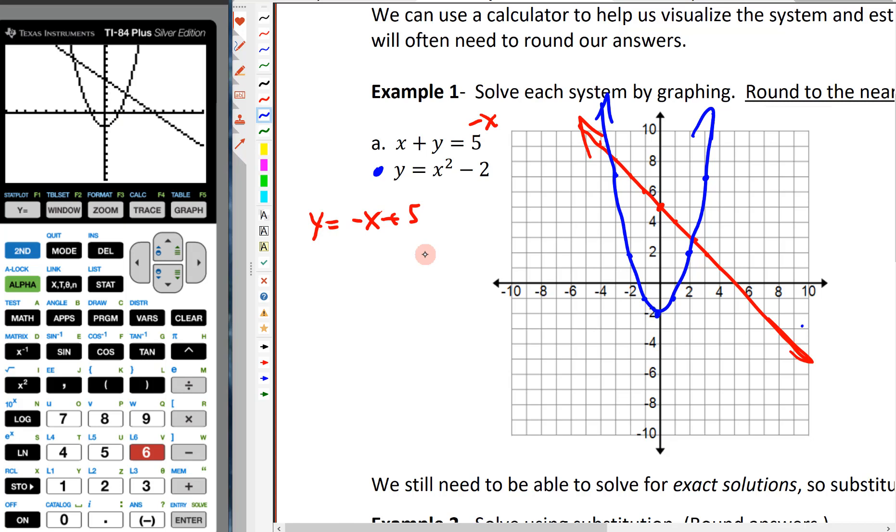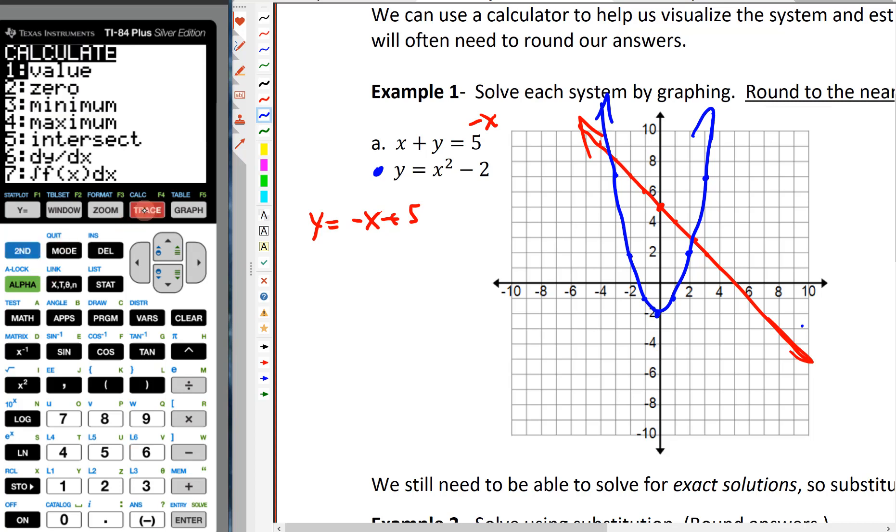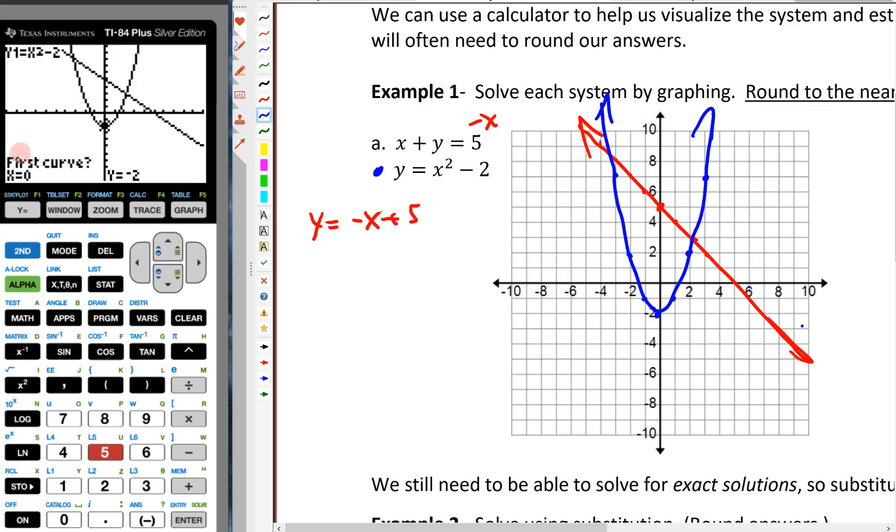Our graph looks really good. And then does anybody remember the buttons you hit to make the calculator find the intersection point between two graphs? Luke. Second trace or second calculate. Number 5, it says intersection. It says, is this one the first curve? So is the parabola the first curve? To say yes, we hit enter.